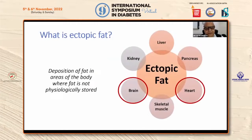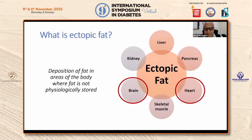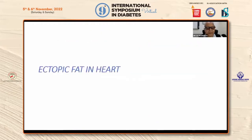What is ectopic fat? It is the deposition of fat in areas of the body where fat is not physiologically stored — like ectopic fat can happen in the brain, can happen in the heart, can happen in the pancreas, can happen in the liver, kidney, and the skeletal muscle. So today I'm going to focus only on two important organs of the body, that is the brain and the heart.